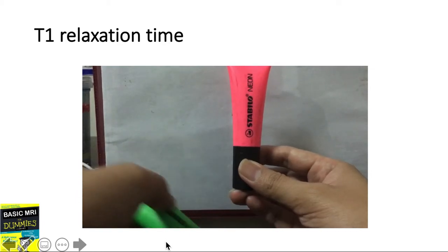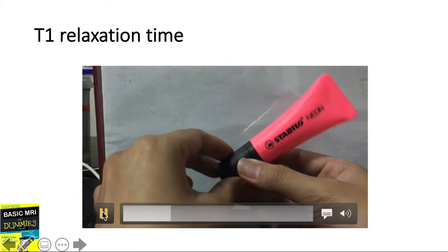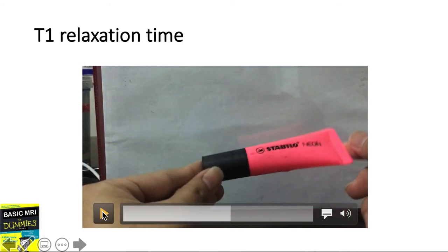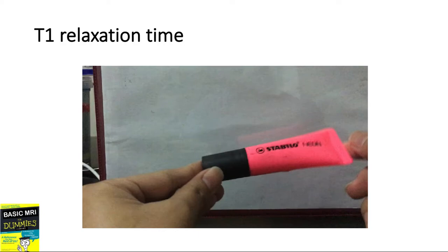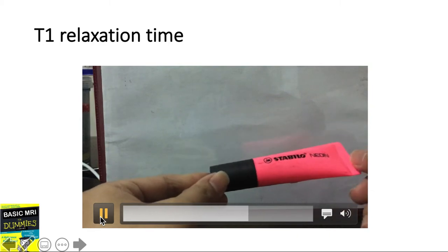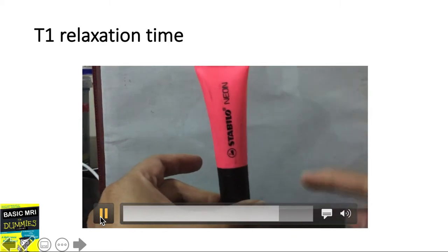After getting hit with the RF pulse, the proton will be oriented in the transverse direction and will precess. At this point it has transverse magnetization. What the proton will then do is try to go back to its longitudinal magnetization by losing the energy to its environment. This is what we call spin-lattice relaxation.